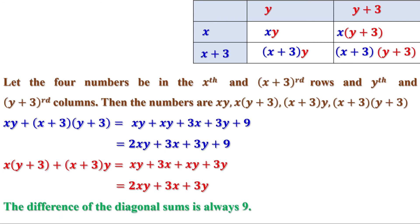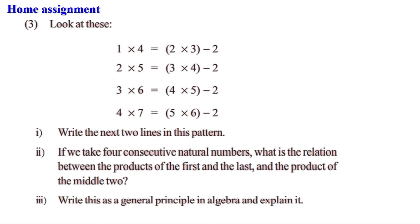Today we have done some problems on page 68 and 69. Now there is a homework. Look at this pattern: 1 into 4 equals 2 into 3 minus 2; 2 into 5 equals 3 into 4 minus 2; 3 into 6 equals 4 into 5 minus 2; 4 into 7 equals 5 into 6 minus 2. Write the next two lines in this pattern. If we take four consecutive natural numbers, what is the relation between the products of the first and the last and the product of the middle two? Write this as a general principle in algebra and explain it.